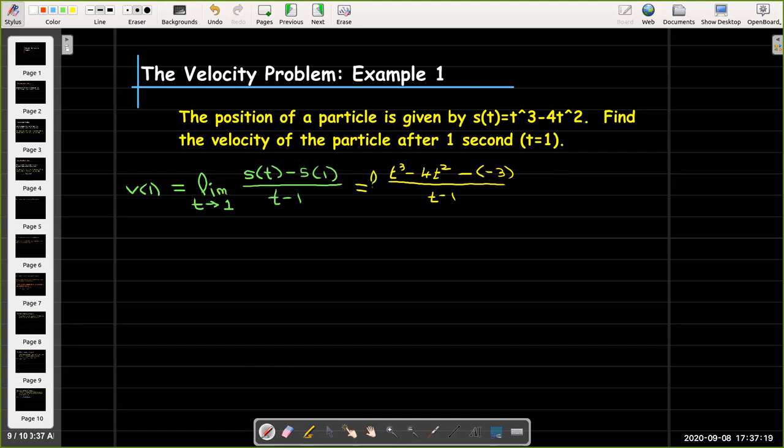And I should not forget to put the limit here as t approaches 1. So let's pause for a minute here and try to simplify this algebraic expression. So what we have in the numerator is t cubed minus 4t squared plus 3, and in the denominator we have t minus 1.